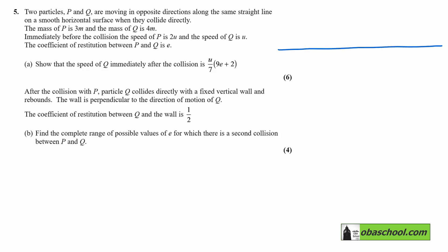So if we look at the situation before the collision, we have P and Q. So we've got P, which is 3m, and we've got Q, which is 4m. This one has a speed of 2u, and this one a speed of u.